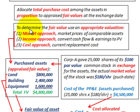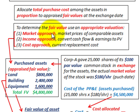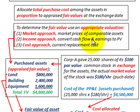We have several ways to determine the fair value using an appropriate valuation method. There's the market approach, where market prices of comparable assets would be used. Or the income approach, where you convert cash flows and earnings into the present value of the assets. And then the cost approach, which would just be the current replacement cost.